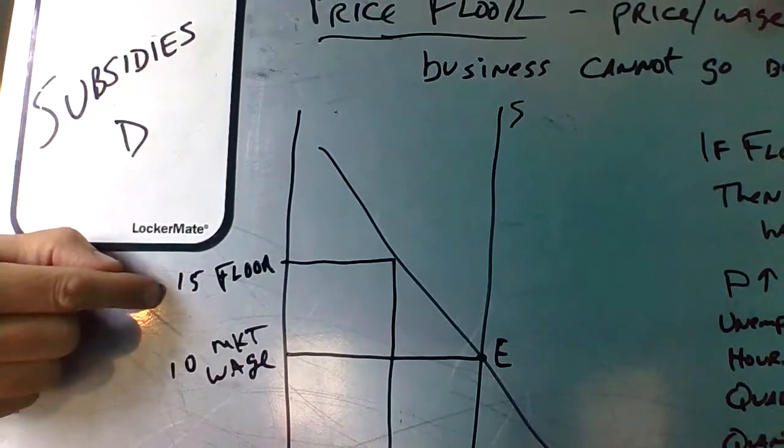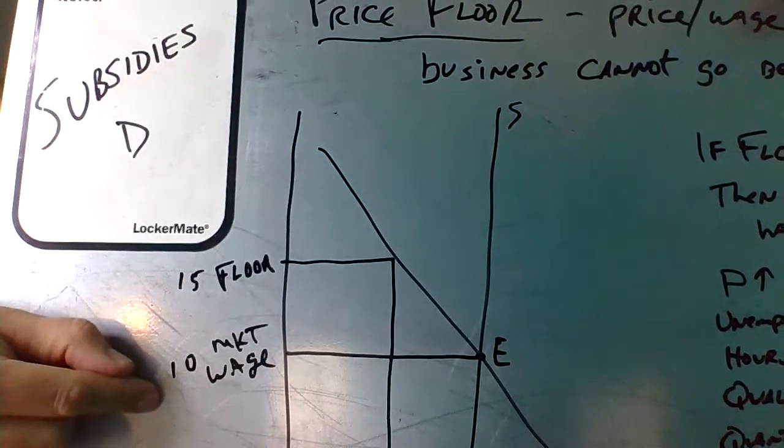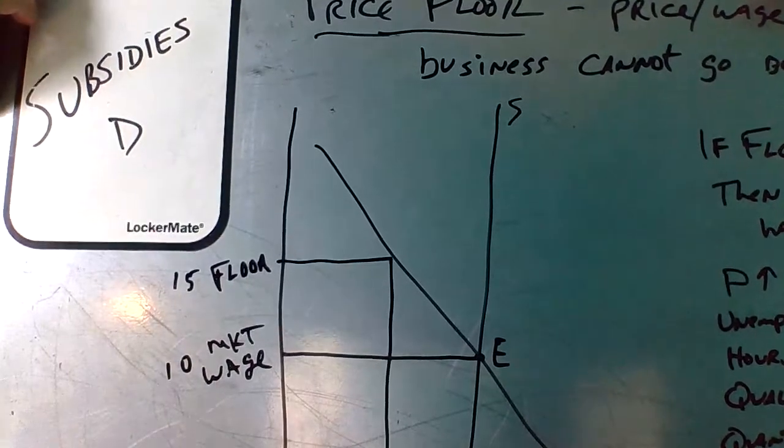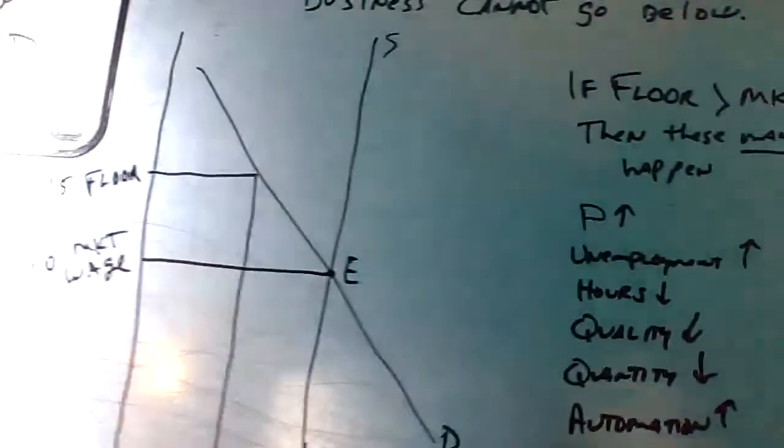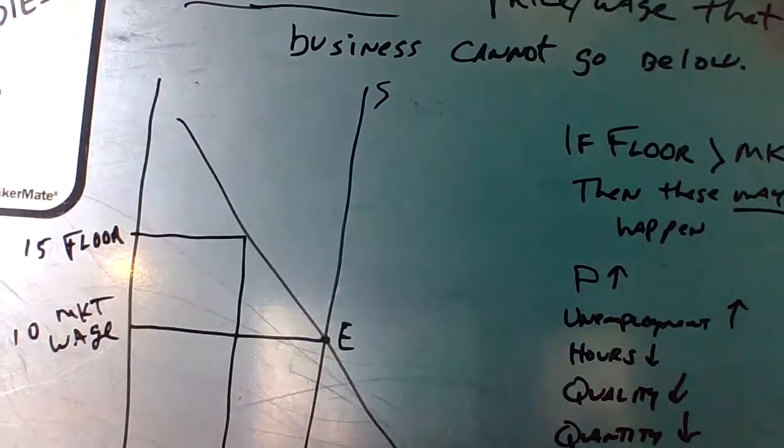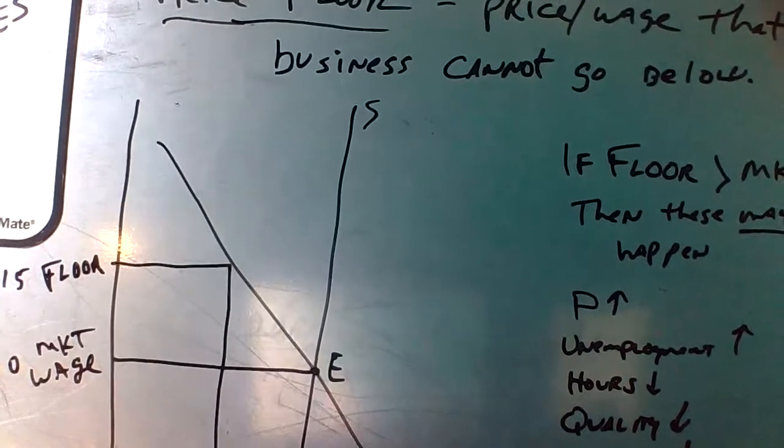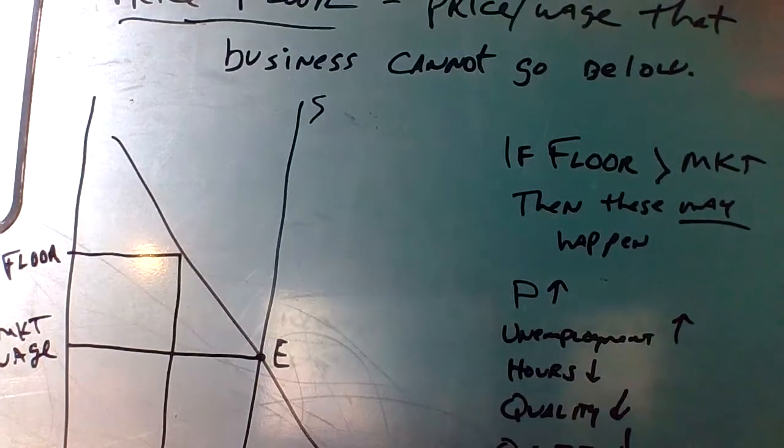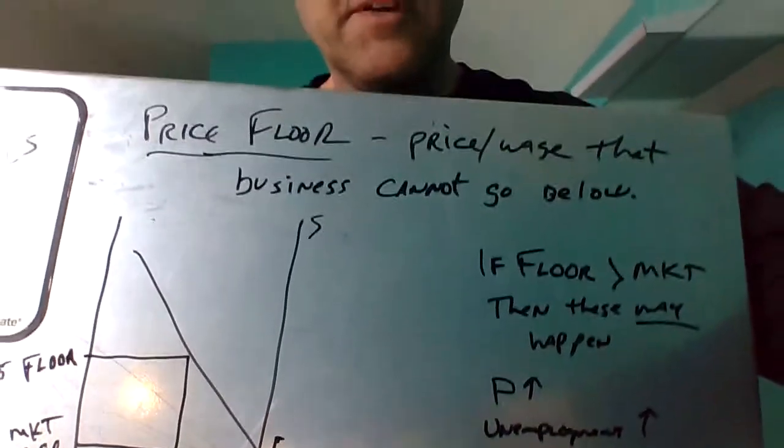So, with respect to minimum wage, what generally happens, it could happen all of these things, or some of these things. But if your floor is above your market, here's what you have to pay, here's what you've been paying, all of a sudden, artificially, everybody gets a $5 raise. Sounds good, I'm sure. If you don't think about it too much, well yeah, I'm getting a $5 raise. But if you're the business owner, if you run a McDonald's or Burger King or whatever, you've got some choices to make. And all of a sudden, your costs have gone up considerably.